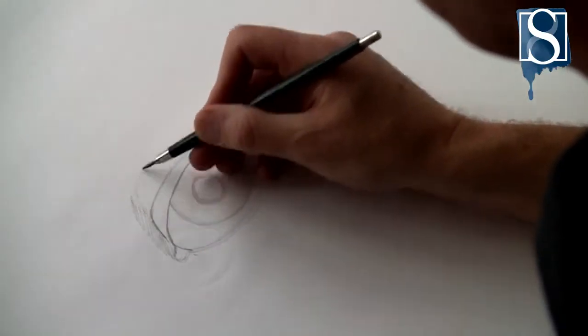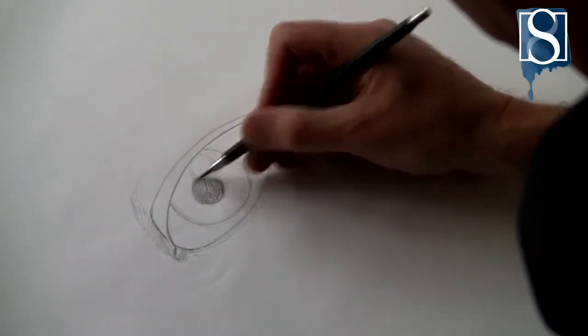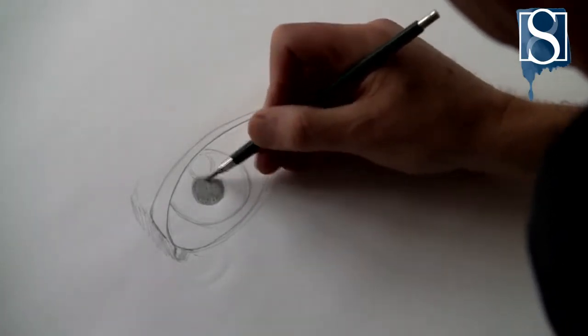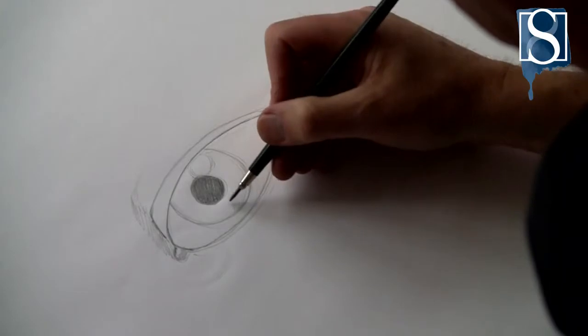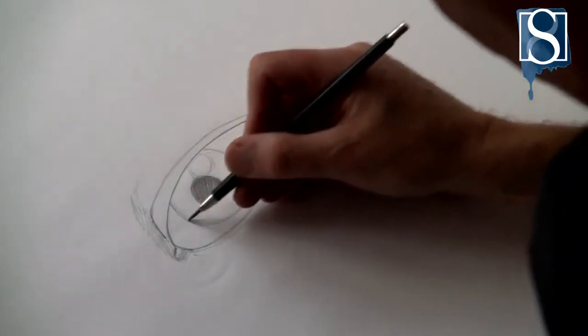Now add tone around the eye and cross hatch the pupil in because this will be the darkest point of the drawing. In the outer circle, now start to draw the texture of the iris.